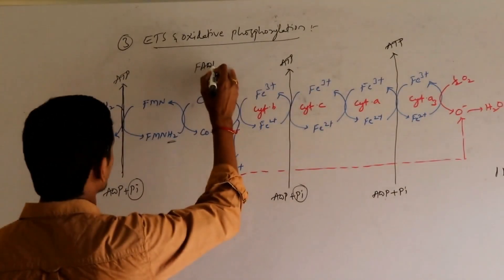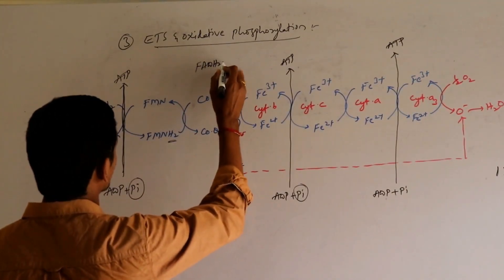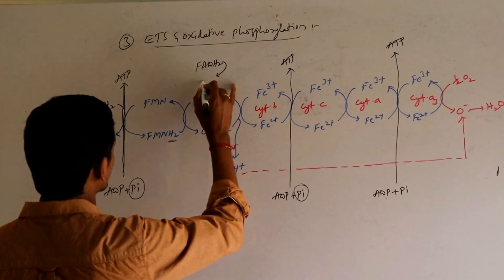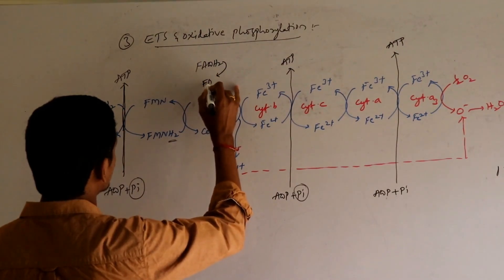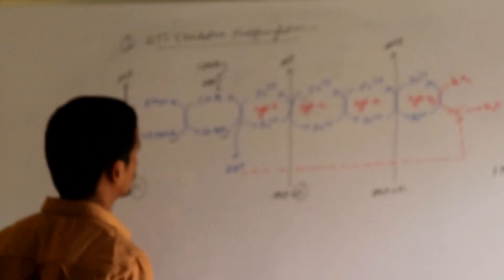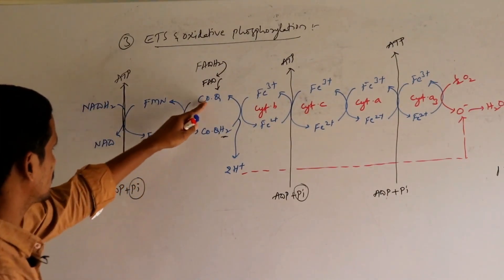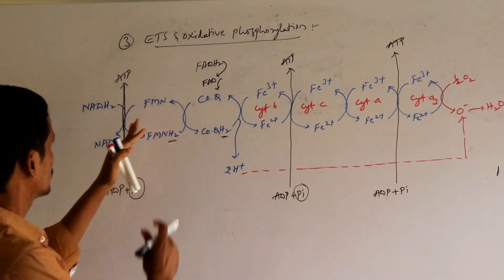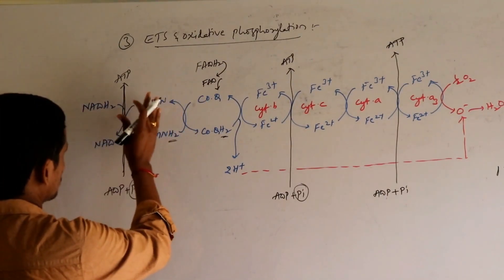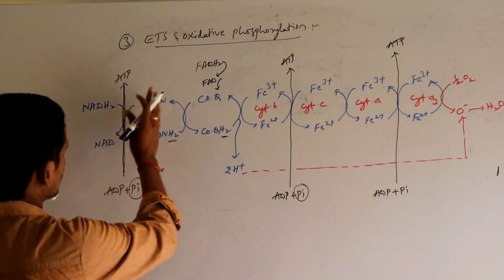FADH2 is involved from here. FADH2 leads to the formation of FAD, and FAD is involved from this step onwards — meaning this particular earlier step is not included.